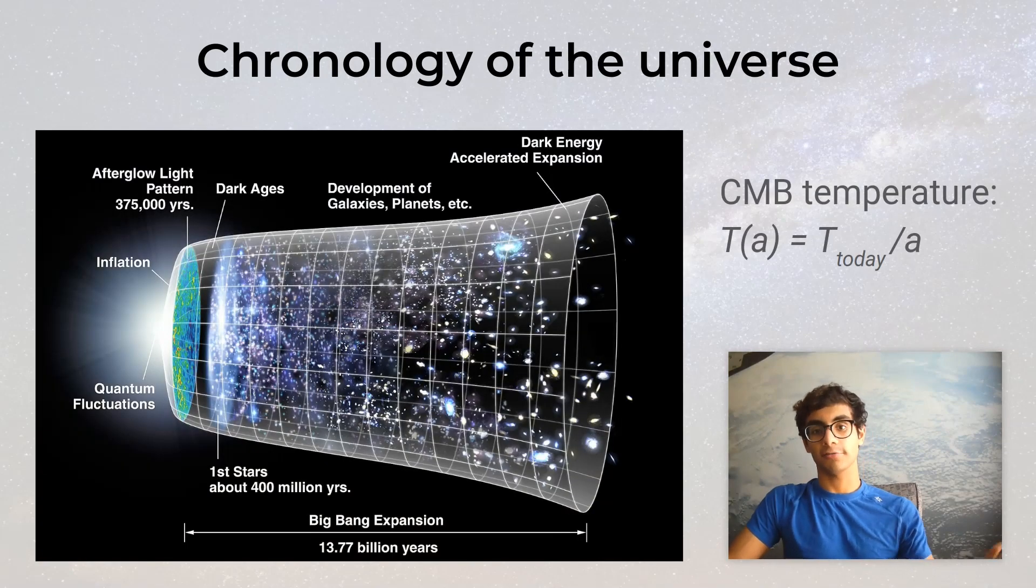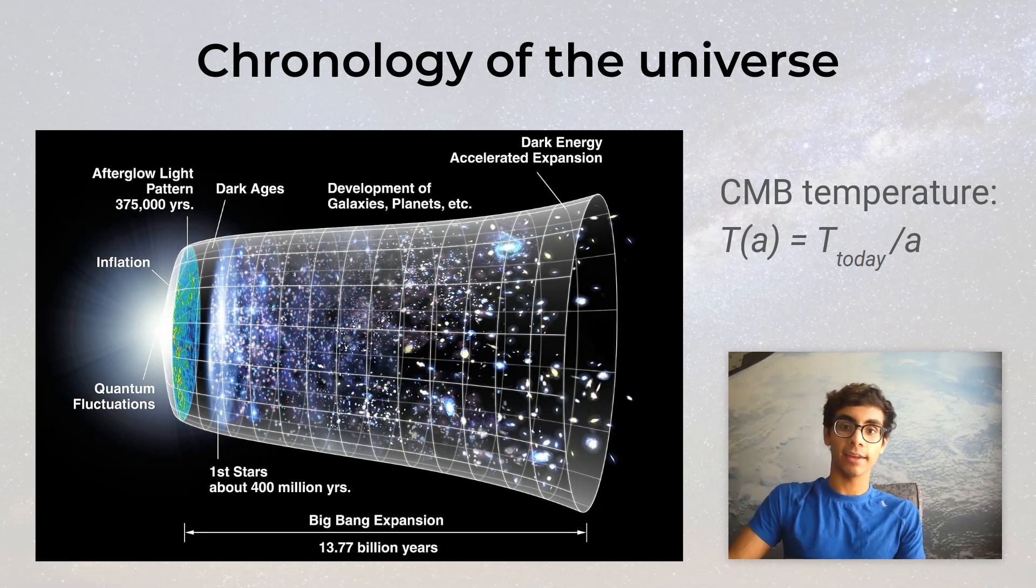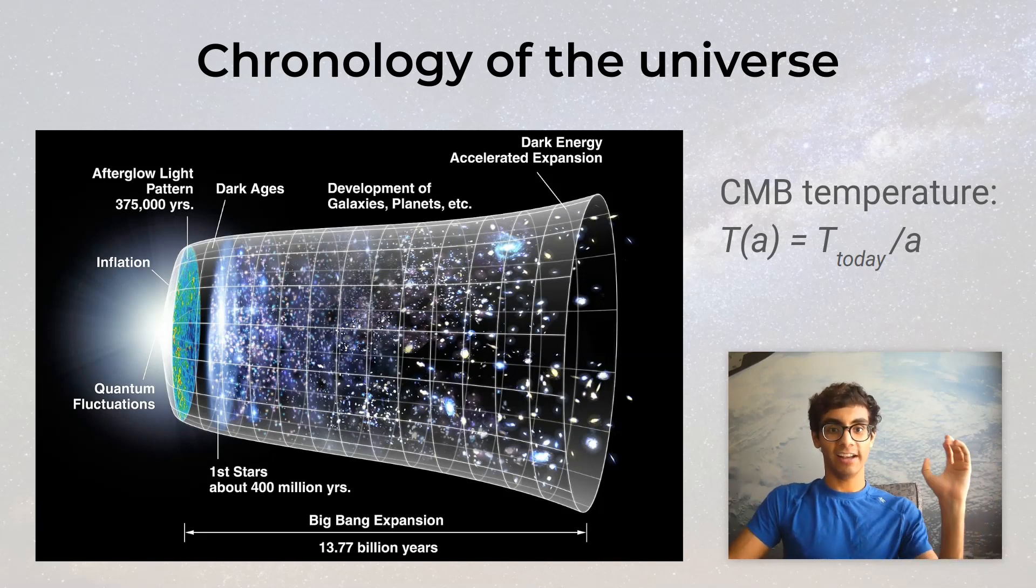Those are the fundamentals. Let's do a crash course on the history of the universe. We know expansion has been happening since the beginning, the Big Bang, about 13.8 billion years ago. As I mentioned, it hasn't been expanding at the same rate the whole time, which is why this picture looks like a sideways bell. There were a lot of significant eras and events in the history of the universe, but I'll only touch on a few of them.